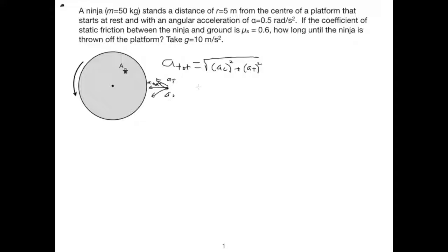We know from rotational motion that we can rewrite this as: the centripetal acceleration is omega squared times r, where r is the distance from the center, all of that squared, and the tangential acceleration is equal to the angular acceleration times the radius, all of that squared. We know that this total acceleration has to be provided by the static friction force divided by the mass of the ninja.